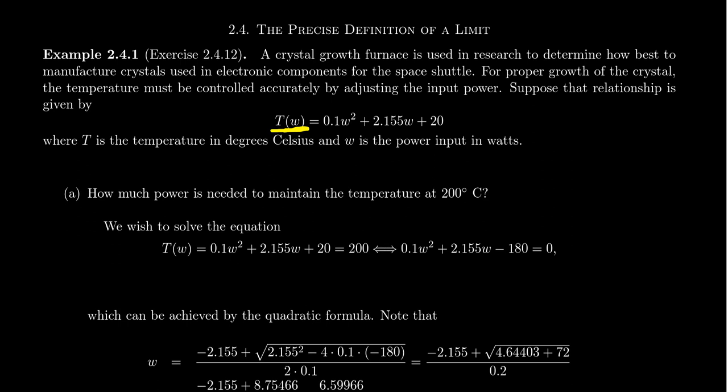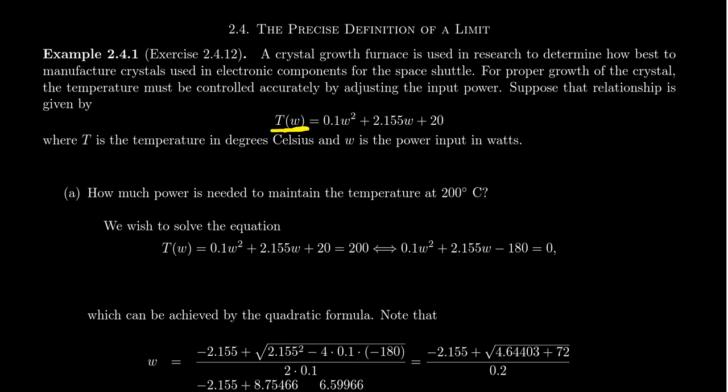T of W, where T is the temperature of the oven, of the furnace, in Celsius. The formula T of W is given as 0.1W² + 2.155W + 20, where W is measuring the power input into the furnace measured in watts. So we have this relationship between the temperature of the furnace and the wattage of the furnace.